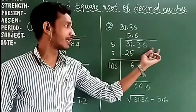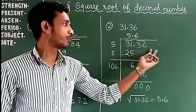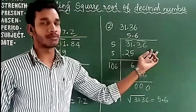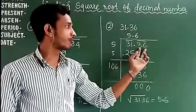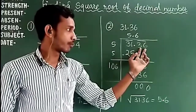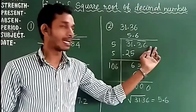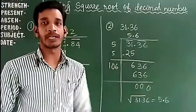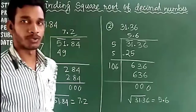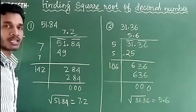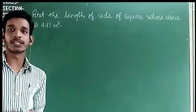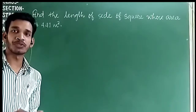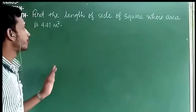For example, if a 3-digit number is there, the first group will be a single digit and then the other digits will make the next group. I hope this concept is clear to you. Now let's see a question related to the square root.